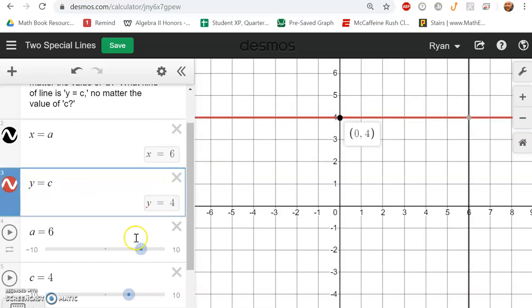I could change it to be y equals negative 2, and it crosses the y-axis at negative 2, and it's horizontal.